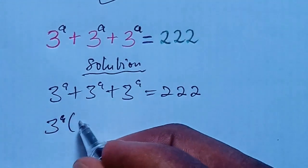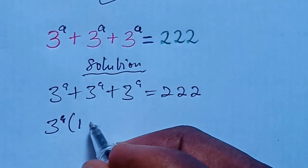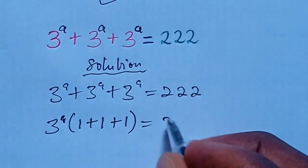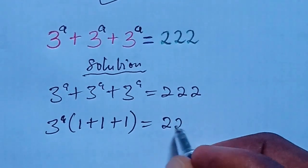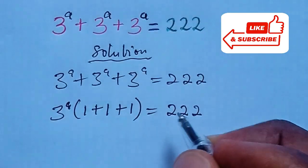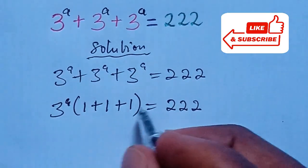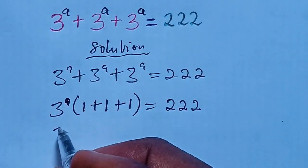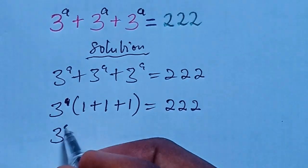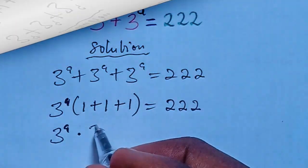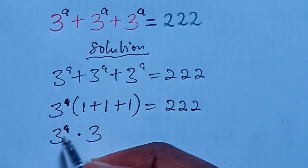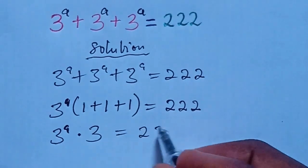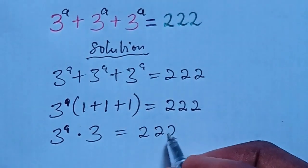Then, we are left inside the bracket with 1 plus 1 plus 1 equal to 222. Then, we add this expression together, so we have 3 to the power of A multiplied by 3 equal to 222.